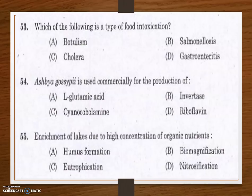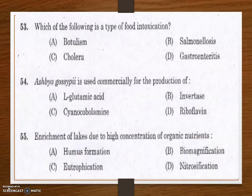Next question: enrichment of lakes due to high concentration of organic nutrients is known as — options are humus formation, biomagnification, eutrophication, and nitrosification. The answer is eutrophication — the excessive richness of nutrients in a lake or body of water, frequently due to nutrient-rich runoff from land, which causes dense growth of plant life.